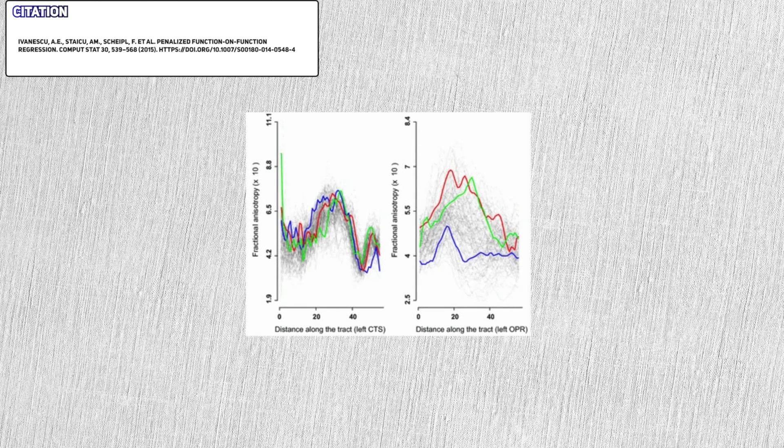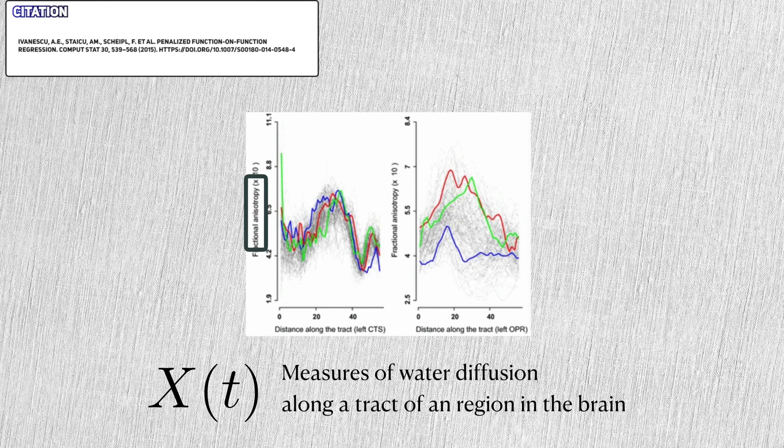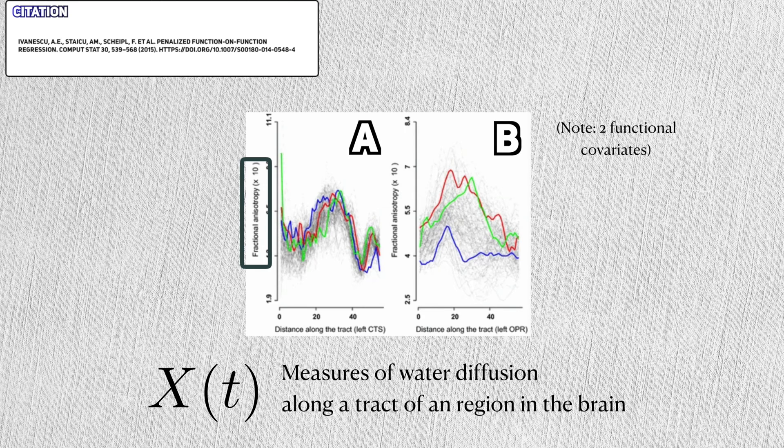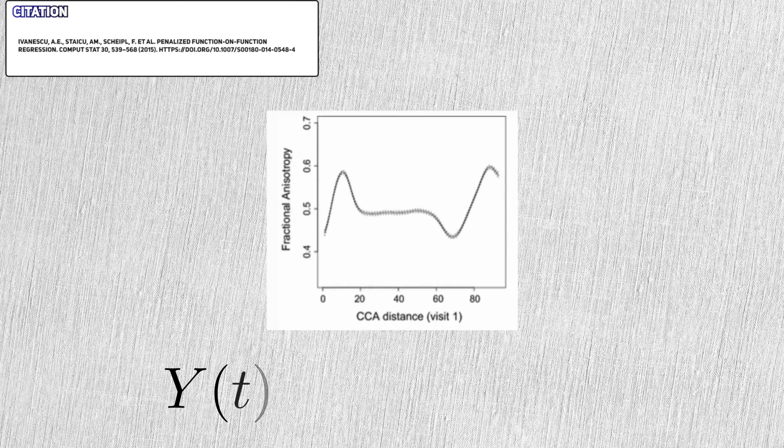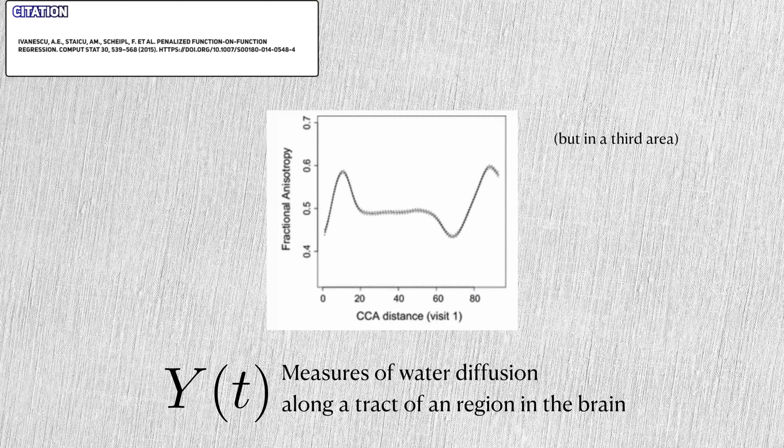In this exploratory analysis, the authors use functional data analysis on fMRI data. I'm not well versed in this field, so if you know a little bit more about this technology, please let me know in the comments. The functional covariate in this case is a rough measure of water diffusion in the brain along tracks in two parts of the brain, which I'll call area A and B, so there's two functional covariates. The functional outcome is actually the same type of data as the covariate, measured in a third area of the brain, which I'll call area C.